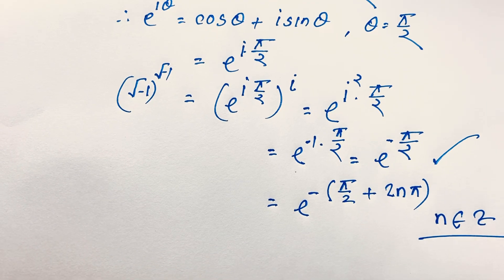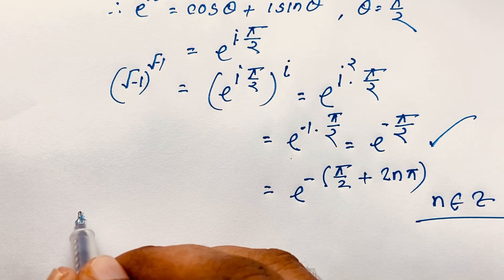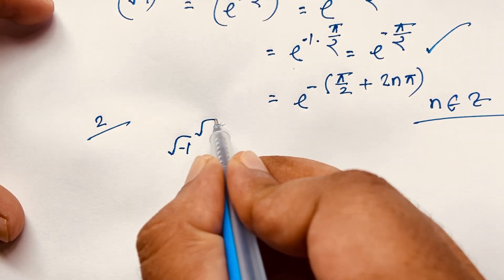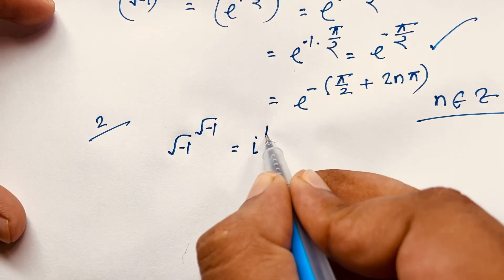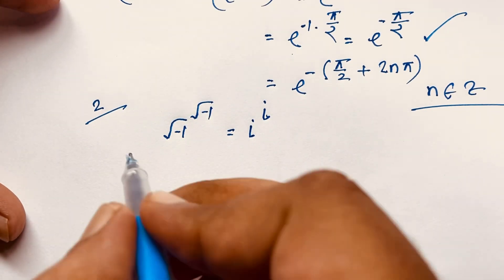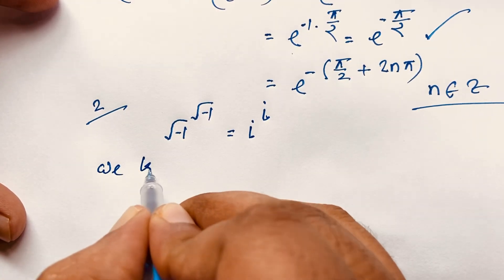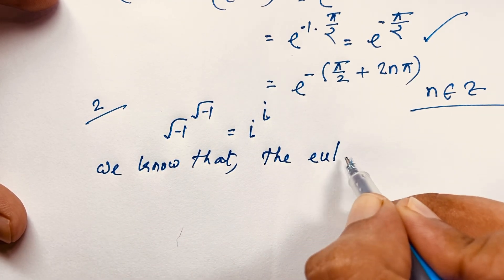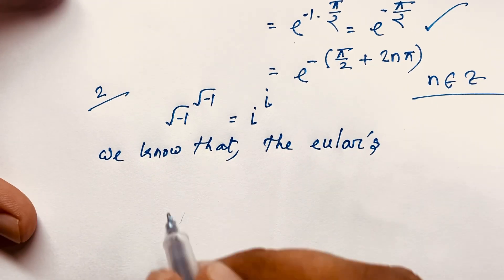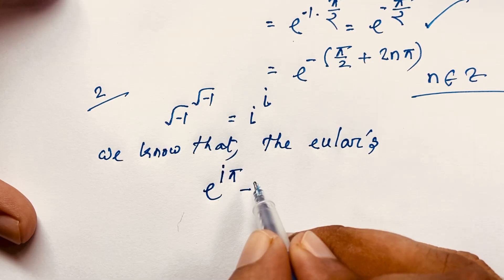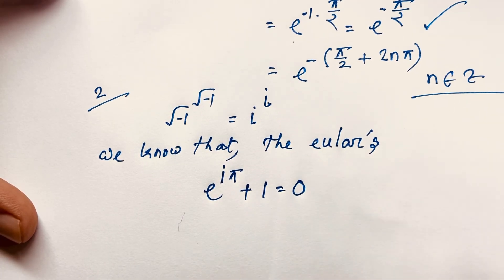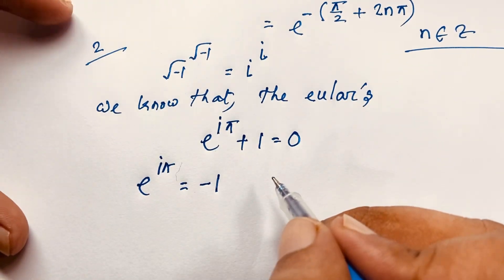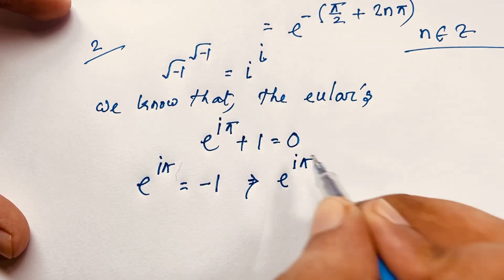Now I will solve this question using a second method. Our question is (√(-1))^(√(-1)) = i^i. We start with Euler's identity: e^(iπ) + 1 = 0, which gives e^(iπ) = -1.